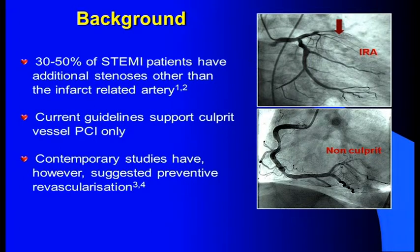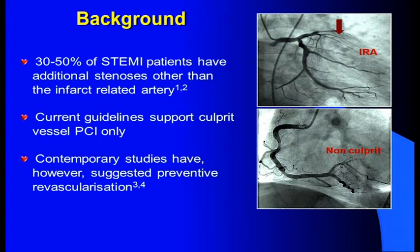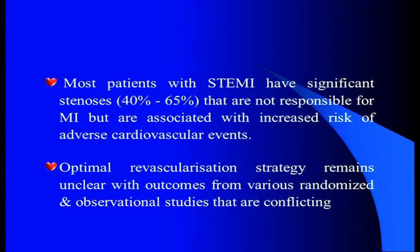Current guidelines advocate only culprit vessel angioplasty. However, two important studies have come recently, and practices in most centers have suggested doing angioplasty of the non-culprit vessels. Most STEMI patients have 40 to 65% of lesions which are not responsible for myocardial infarction but are associated with increased risk of adverse cardiovascular events.